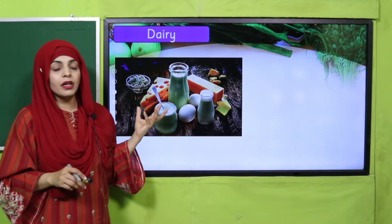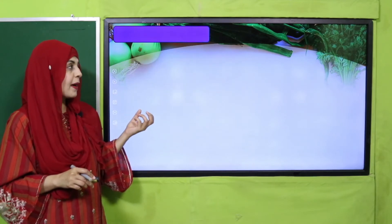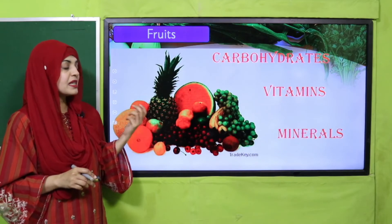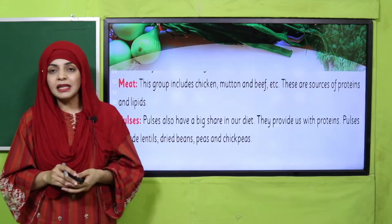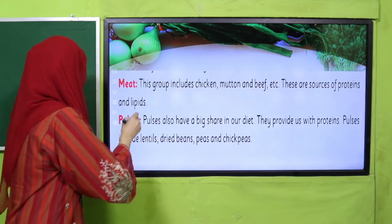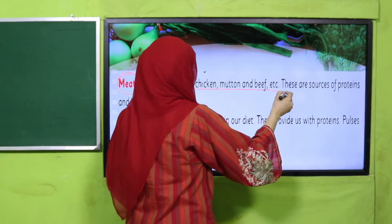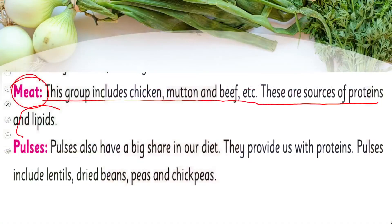Dairy products made from milk contain proteins and lipids. Then comes meat — this group includes chicken, mutton, beef, fish, etc. These are sources of proteins and lipids, and they help in building the muscles of our body.